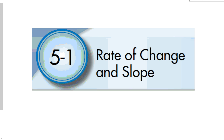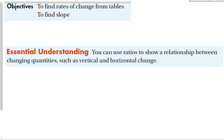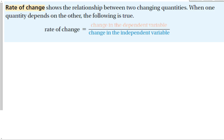Section 5-1: Rate of Change and Slope. The objective for this section is to find rates of change from tables and to find the slope. Our essential understanding is that we can use ratios to show a relationship between changing quantities, such as vertical and horizontal change, which is what slope is.